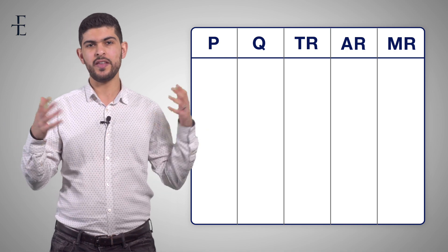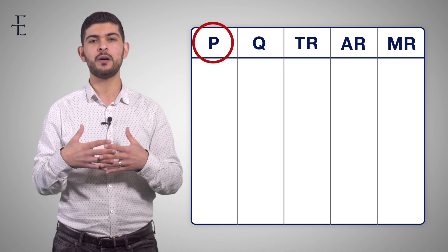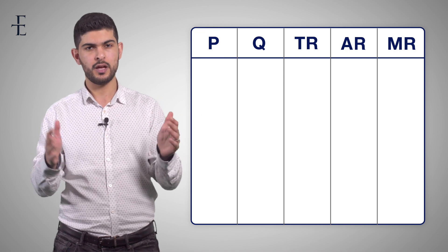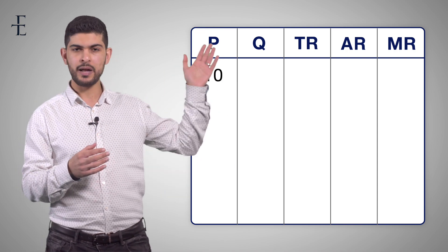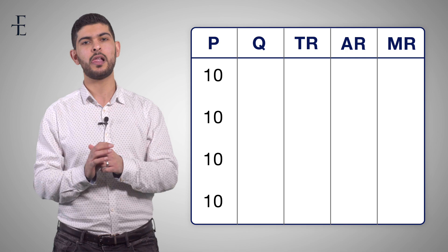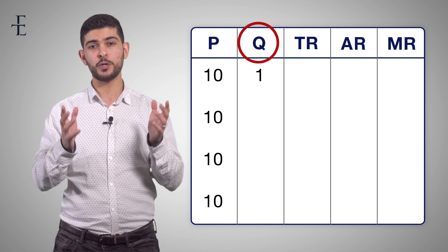Hypothetically, let's just say that in this particular market, the price that firms have to sell this good for is £10. So we're going to populate this table with £10, £10, £10, £10. Now, the quantities 1, 2, 3, and 4.